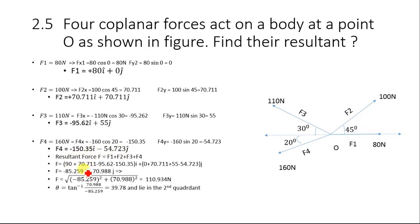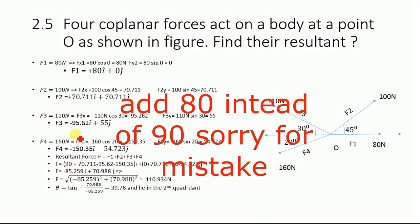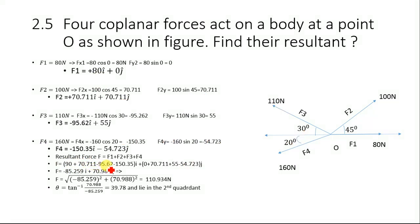The resultant force equals the sum of F1, F2, F3, and F4. Adding the x-components: 80 + 70.711 − 95.62 − 150.35, and adding the y-components: 0 + 70.711 + 55 − 54.723.